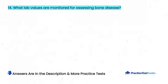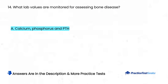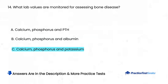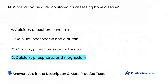What lab values are monitored for assessing bone disease? A. Calcium, phosphorus, and PTH. B. Calcium, phosphorus, and albumin. C. Calcium, phosphorus, and potassium. D. Calcium, phosphorus, and magnesium.